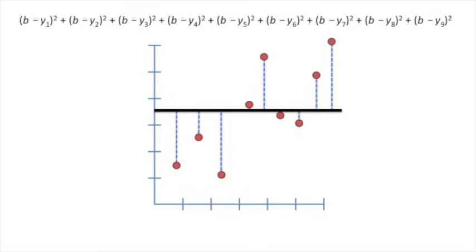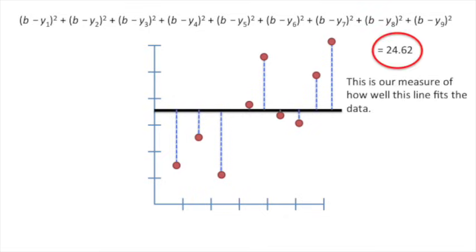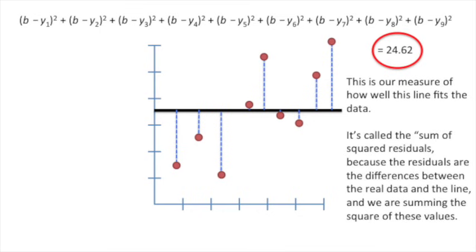Here's the equation that shows the total distance the data points have from the horizontal line. In this specific example, 24.62 is our measure of how well this line fits the data. It's called the sum of squared residuals because the residuals are the differences between the real data and the line, and we are summing the square of these values.